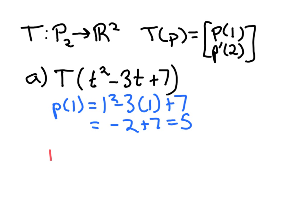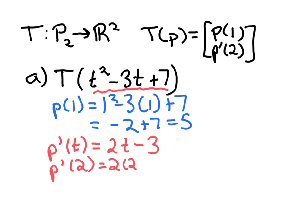And then we would need to find p'(2). So I could start out just finding the derivative. p'(t) would be 2t-3, just differentiating this function up here, and then substitute 2. So this is 2×2-3, 4-3, so 1.